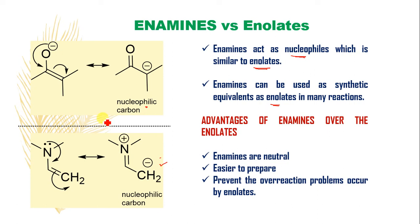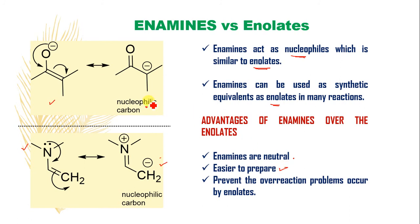What are the advantages of enamines over enolates? Though enolates are very helpful for the formation of C-C bonds, the advantages of enamines are: first, enamines are neutral — they are not charged species like enolates; second, they can be prepared easily; and third, we can also prevent overreactions which generally occur with enolates. These are the advantages of enamines over enolates in organic synthesis.